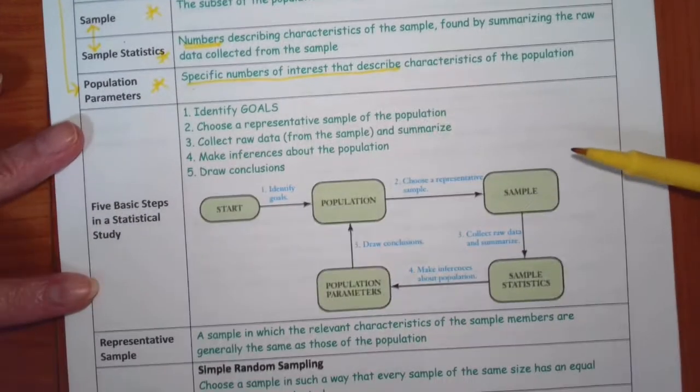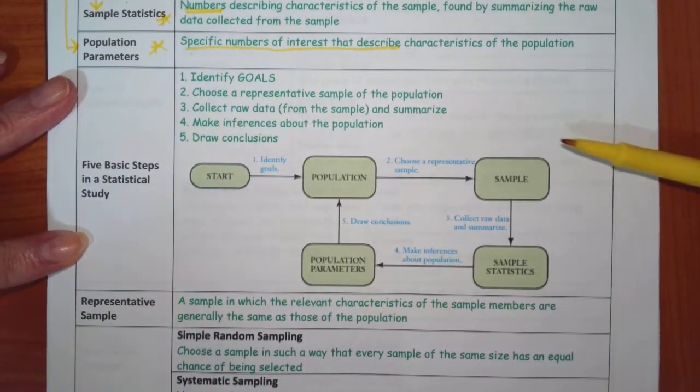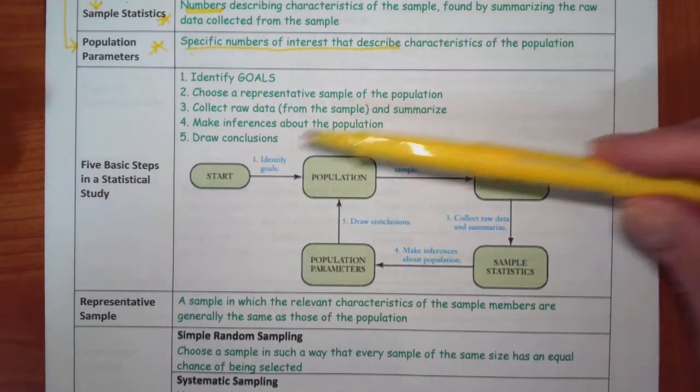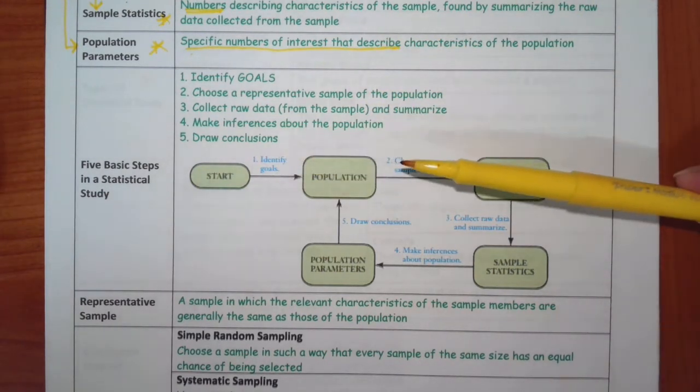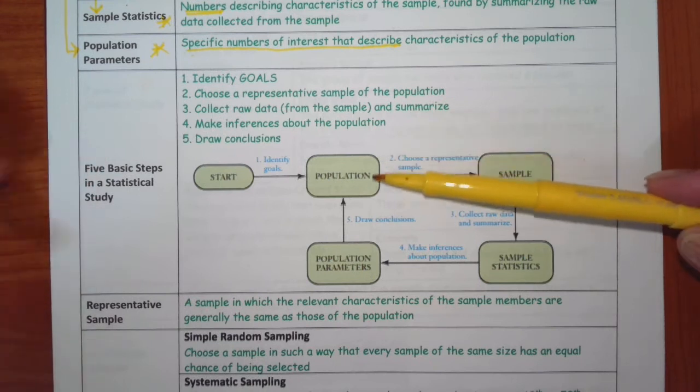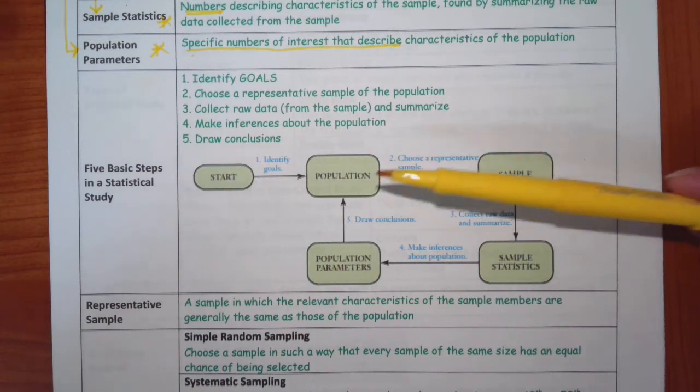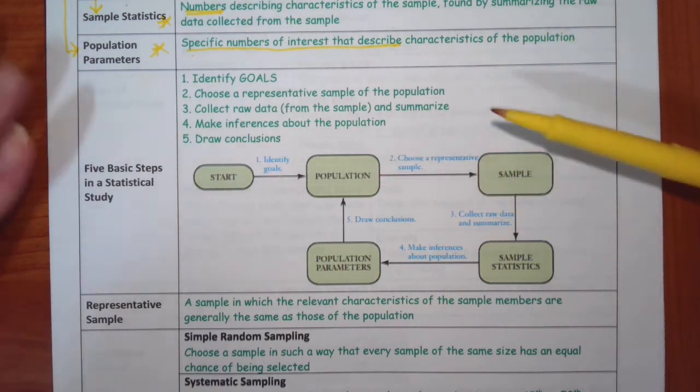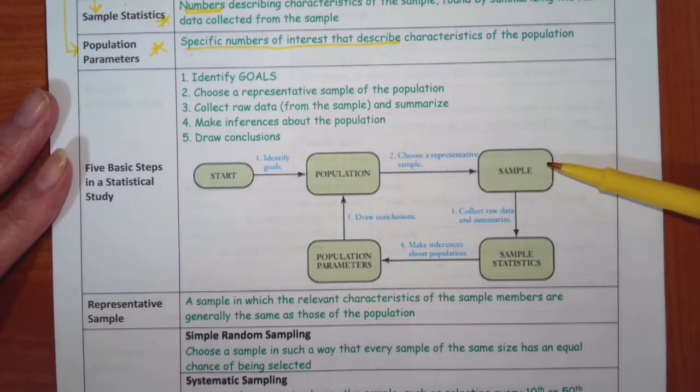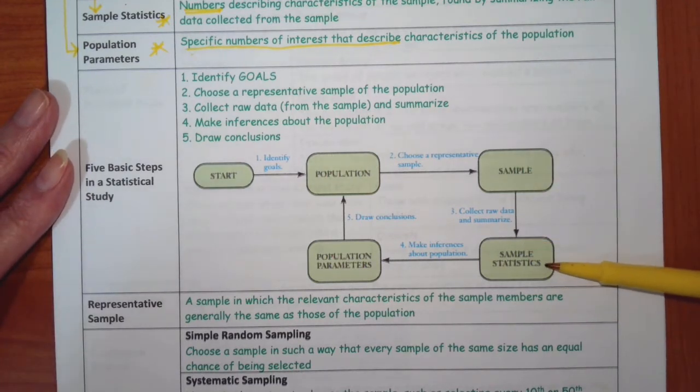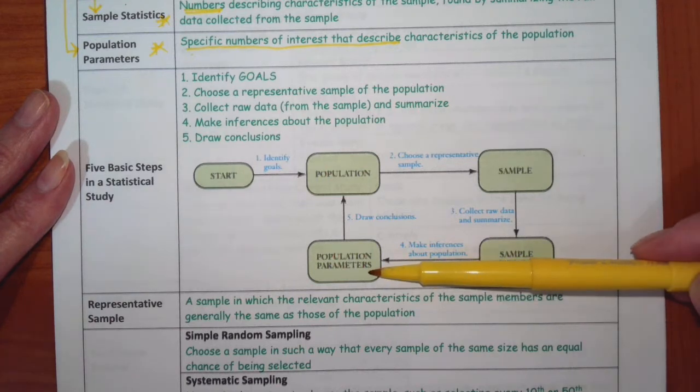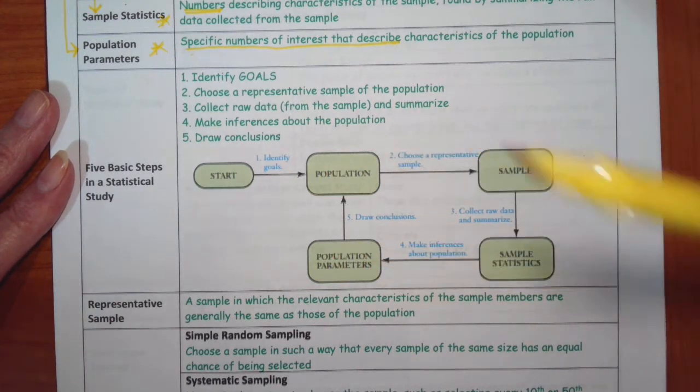So as you can see here in the five basic steps, what do you want to know? That's what you first do. You start, you identify your goals, and that includes identifying what you want to know and who you want to know it about. So the population is who you want to know about. Then you choose a sample. You collect the data, and that gives you the sample statistic. And then from that you apply it to the entire population, and then draw your conclusions.